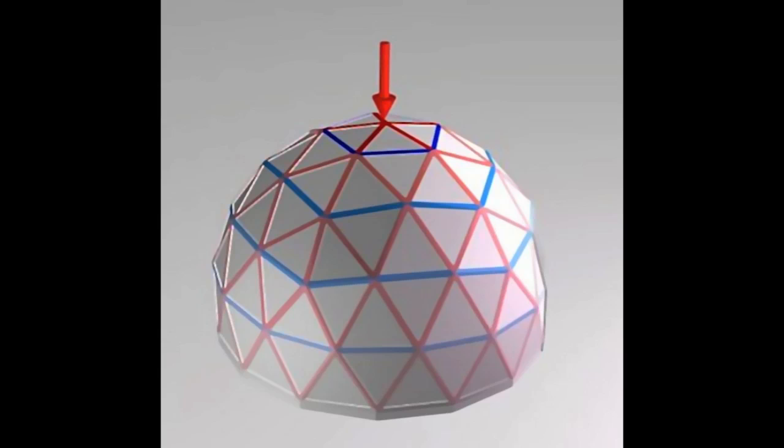So what that causes is these blue tension rings to form around the dome. And if you look at any given strut, we'll highlight a couple of struts there now. You can see that there is compression and tension on every single strut—there's two tensions and the rest are compression, three or four depending on what type of strut you have.